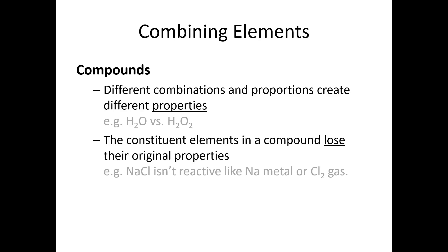Whenever two elements combine into a compound, they're going to lose their original properties. For example, if I take sodium metal — an extremely reactive metal that reacts with water — and I take chlorine gas — an extremely reactive, very toxic gas that reacts violently with metals — and I chemically combine these into sodium chloride, NaCl, this is something I could put on my food. I'm taking two highly reactive substances and combining them into just table salt.